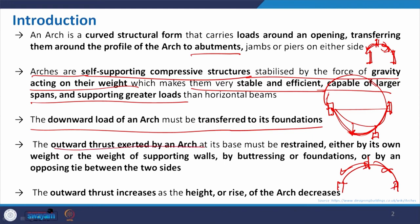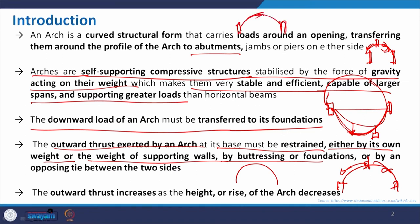The downward load of an arch must be transferred to its foundation; the load distributes gradually to the support components, which then transfer it to the foundation. The outward thrust exerted by an arch at its base must be restrained either by its own weight or by the weight of supporting walls. The arch form may be supported by full walls, or sometimes with buttresses. In some historic buildings, the arch form is supported by the wall, and flying buttresses are used to reduce the wall.